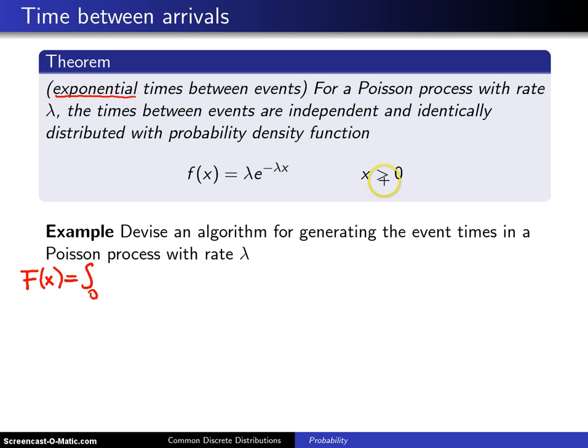Capital F(x) is the integral from 0, that's the bottom of the support, up to x of f(w)dw. So this will be λe^(-λw)dw, and when you integrate this you get -e^(-λw).